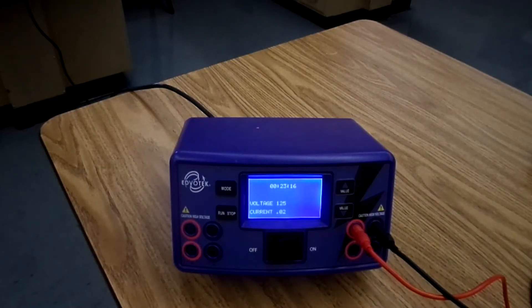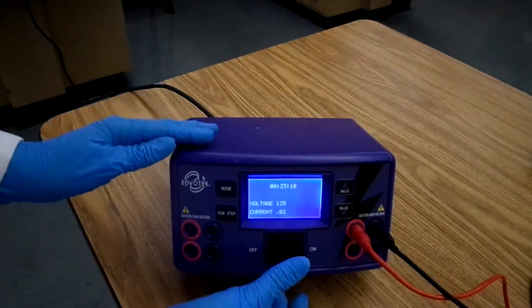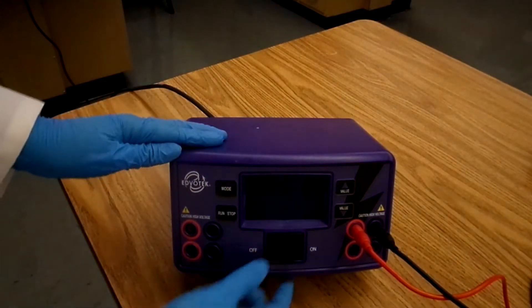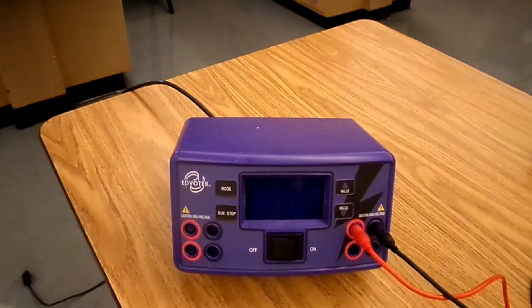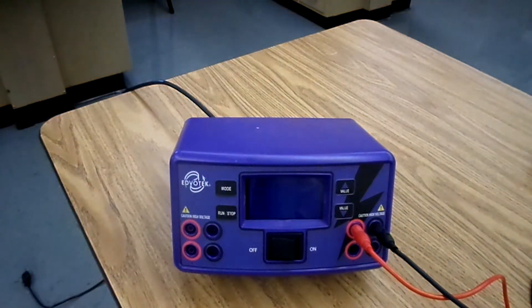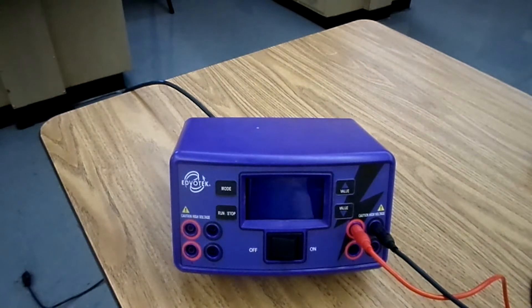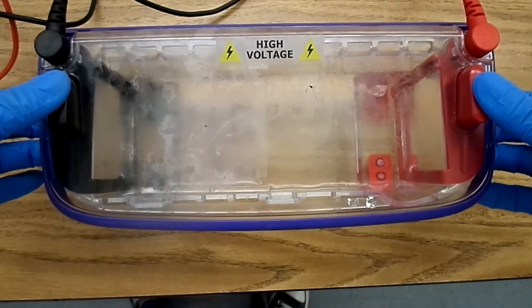We've let the gel run for about 25 minutes. So we're going to turn off, unplug the power supply, and then wait about 10 seconds before we unplug the gel electrophoresis chamber. With everything unplugged, we can now take off the top.